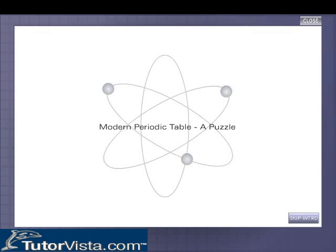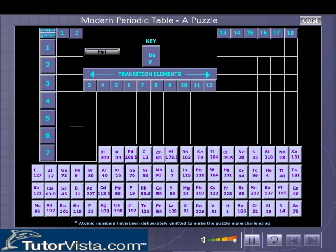Chemically similar elements are located in a given group. This is an exercise on the location of elements in the periodic table. The skeletal structure of the modern periodic table is given here with elements represented by their symbols.